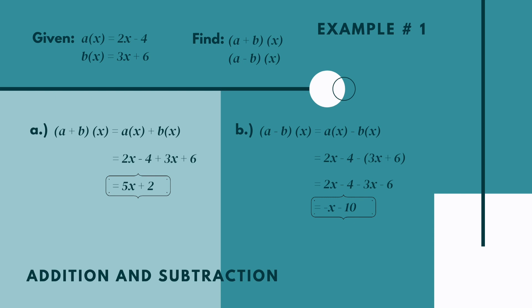We have a(x) that is 2x minus 4, plus b(x) that is 3x plus 6. After the substitution, we need to combine like terms. So 2x combined with positive 3x: 2x plus 3x is equal to 5x. Next, negative 4 plus 6 is equal to positive 2. Our final answer is 5x plus 2. This is now the value of (a + b)(x).